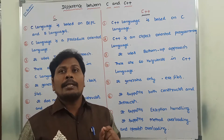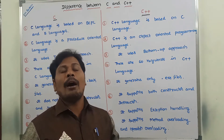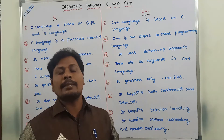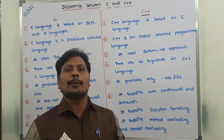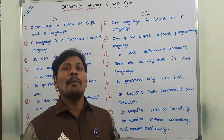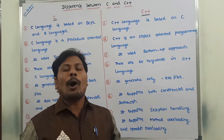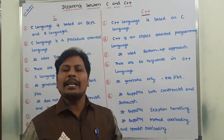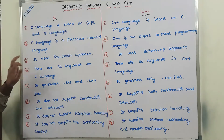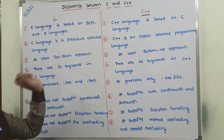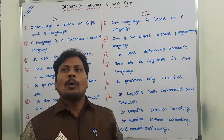Object-oriented language examples are C++, Java, and Python. So these three are called object-oriented programming languages. Among them, Java is a pure object-oriented programming language.